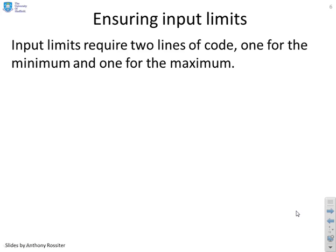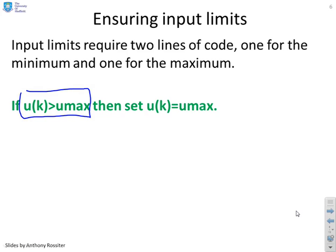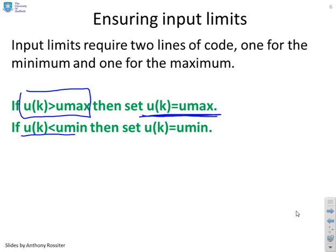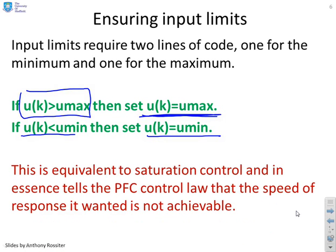If you've got input limits, all you need to do is add two lines of code, one for the minimum, one for the maximum. If UK exceeds the maximum allowable value, then just set it equal to the maximum value. Similarly, if UK is lower than the minimum allowable value, just set it equal to the lower limit. You can see very simple pieces of code. And this is equivalent to saturation control, and in essence tells the PFC control law that the speed of response it wanted is not achievable. PFC is asking for a larger U than can be delivered.